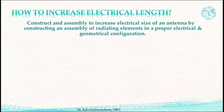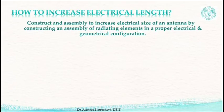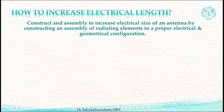In order to increase the electrical length, we need to construct an assembly of radiating elements in a proper electrical and geometrical configuration to form an antenna array. Usually, the elements of the array are identical. The individual elements may be of any type, such as dipoles, loops, apertures, reflectors, etc.